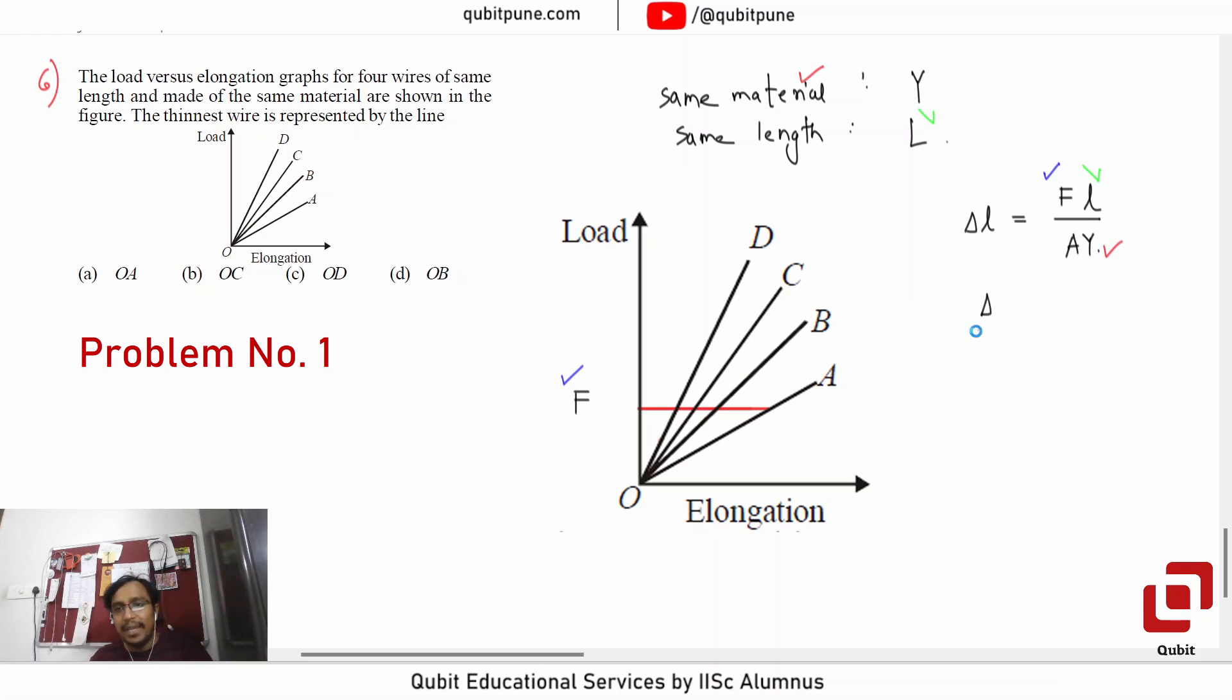So basically, delta L times A is constant. So larger the elongation, smaller the area. Smaller the area means thinner the wire, which in this case is A. Therefore, wire A is thinnest.